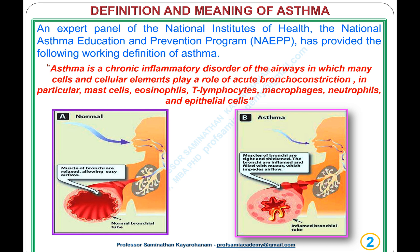In a normal person's bronchial tube, the muscles of the bronchi are relaxed, allowing easy airflow and no difficulty in breathing. But in the case of asthma patients, the bronchial tube is inflamed and filled with mucus, and the muscles of the bronchi are tight and thicker, which impedes airflow and creates difficulty in breathing.